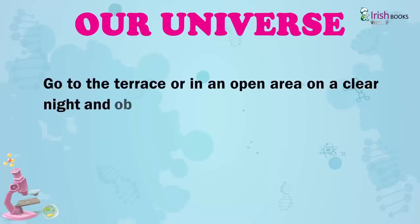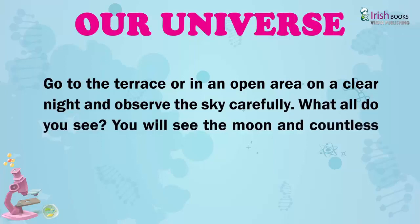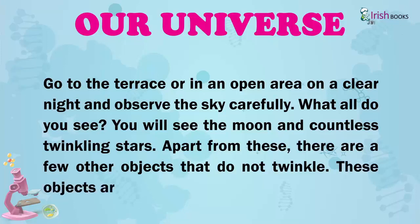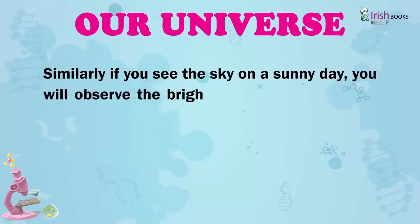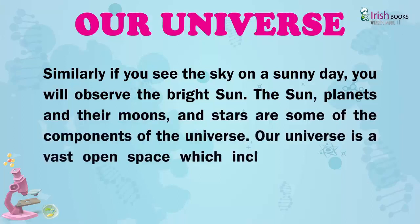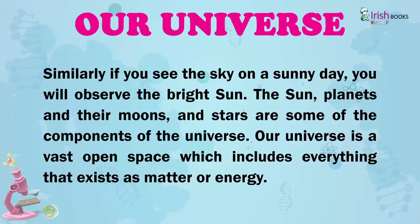Universe. Go to the terrace or in an open area on a clear night and observe the sky carefully. What all do you see? You will see the moon and countless twinkling stars. Apart from these, there are a few other objects that do not twinkle. These objects are the planets. Similarly, if you see the sky on a sunny day, you will observe the bright sun. The sun, planets and their moons and stars are some of the components of the universe. Our universe is a vast open space which includes everything that exists as matter or energy.